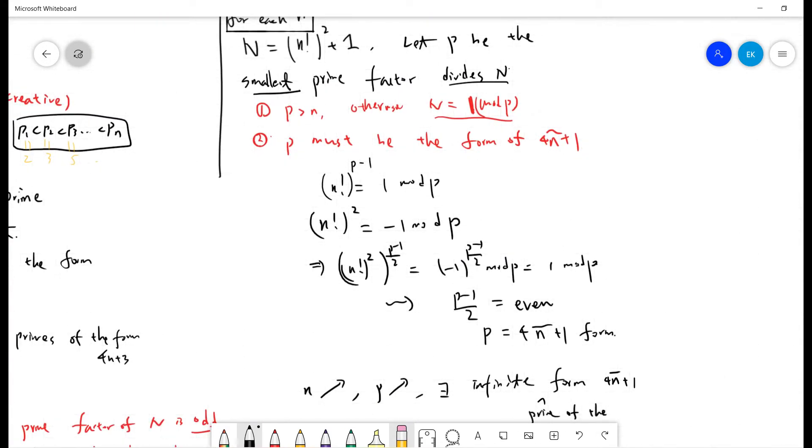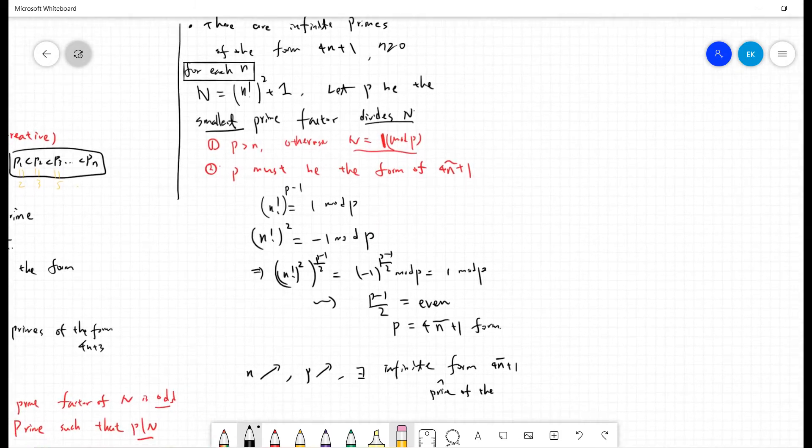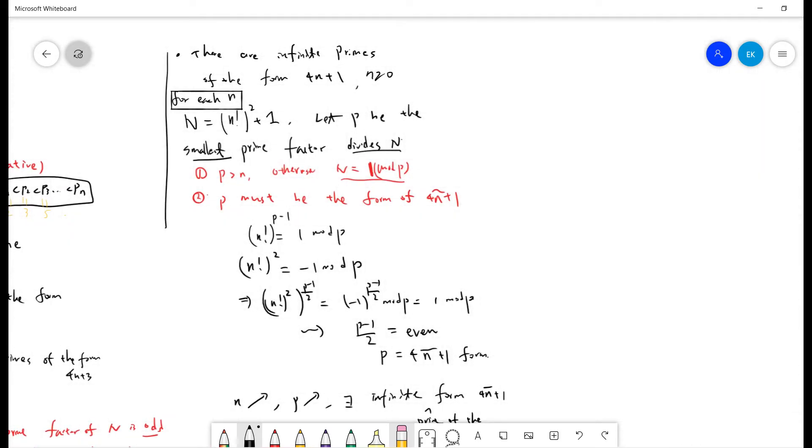So let's go to the third one. People like to talk about this one. It's a little bit tricky. There are infinite primes of the form 4n plus 1. So p0 is 1, but 1 cannot be prime. So the first one is 5. For each n, let's define capital N to be n factorial squared plus 1.